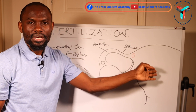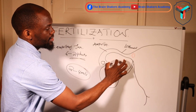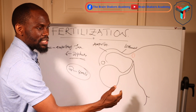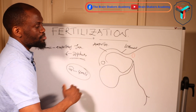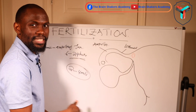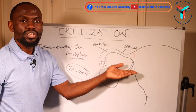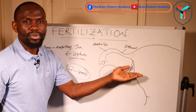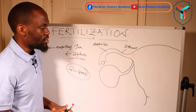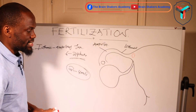Some literature even includes the sixth day, meaning coitus five or six days prior to ovulation could still result in pregnancy, because the spermatozoa remains viable when the woman ovulates.